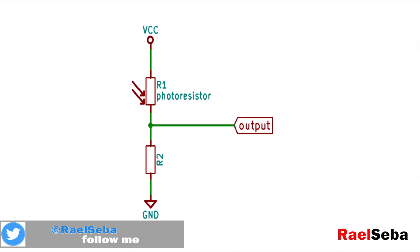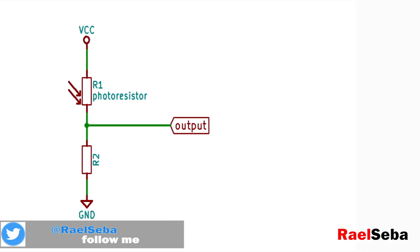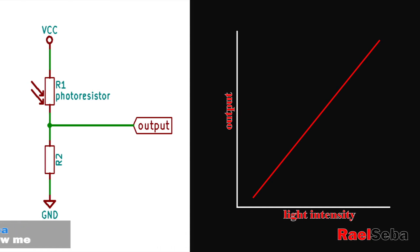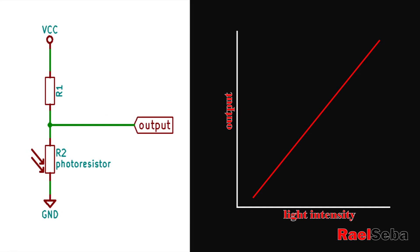If the input resistor is the photoresistor, the output will be directly proportional to light intensity, as shown in the graphical presentation on the right-hand side of the screen. But if the output resistor is the photoresistor, the output becomes inversely proportional to light intensity, as shown in the other graphical presentation.